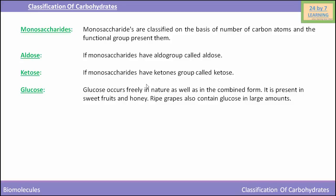Glucose is the most common monosaccharide and serves as the primary source of energy in most living organisms. Glucose occurs freely in nature as well as in combined form. It is present in sweet fruits and honey, and ripe grapes also contain glucose in large amounts. This concludes the classification of carbohydrates.